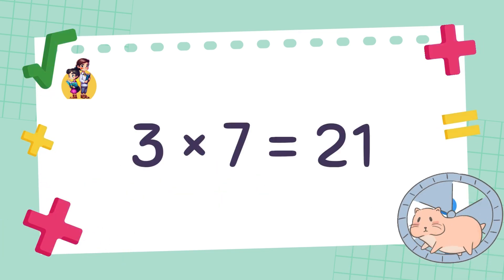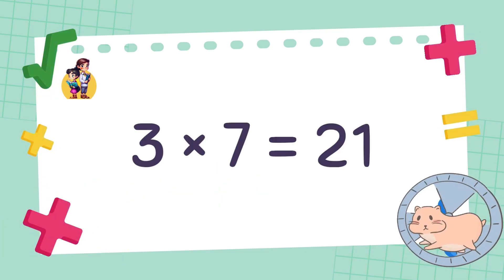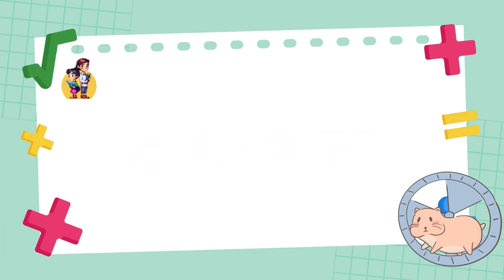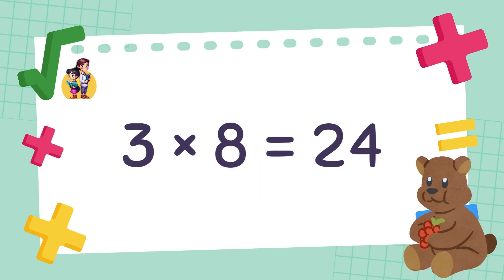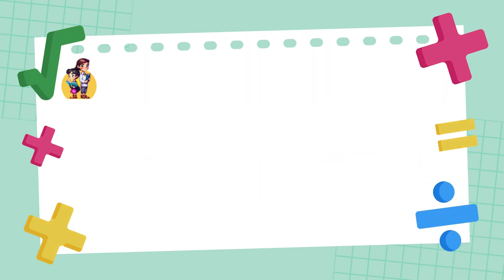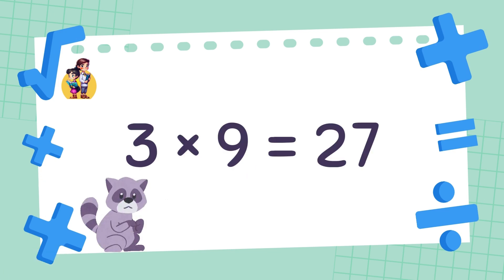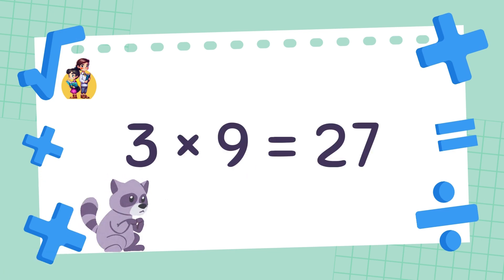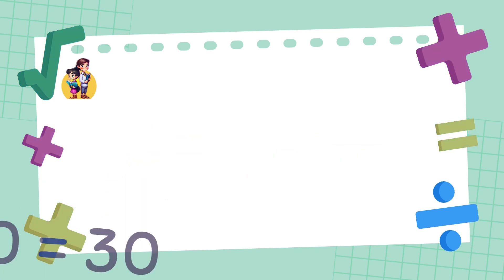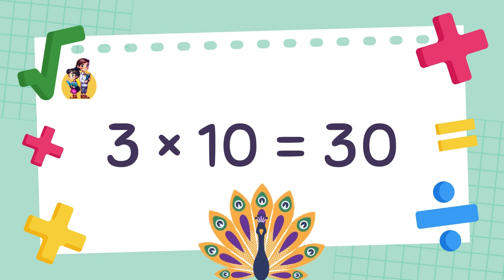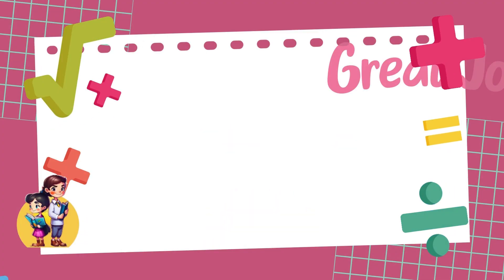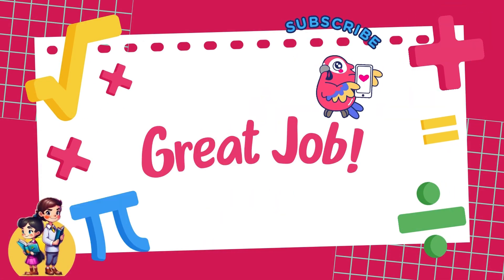3 times 7 is equal to 21. 3 times 8 is equal to 24. 3 times 9 is equal to 27. 3 times 10 is equal to 30. Great job!